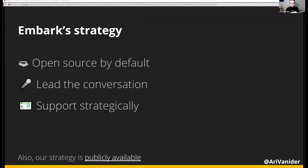The second part is leading the conversation. We're working in a lot of spaces like open source game dev or the relatively young Rust programming language, where there are big problems and no clear answers. We want Embark to drive open conversation and collaboration around these problems and act as a thought leader — building open projects, communities, and actively inviting people to collaborate with us. The final part of our strategy is strategic support: we give back to developers making great things and strategically invest in projects working towards our goals. This can involve monetary sponsorship of individuals or projects, hiring contract work, or allocating our own engineering resources.